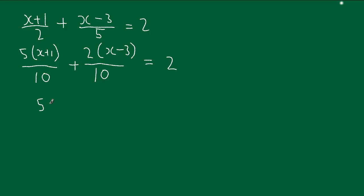So 5 times x is 5x, 5 times 1 is 5. And we add that to 2 times x, which is 2x. 2 times minus 3 is minus 6.